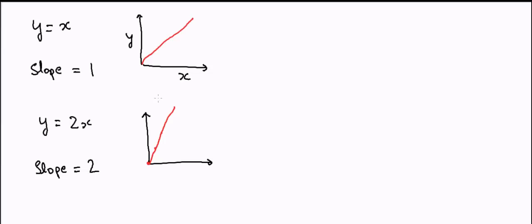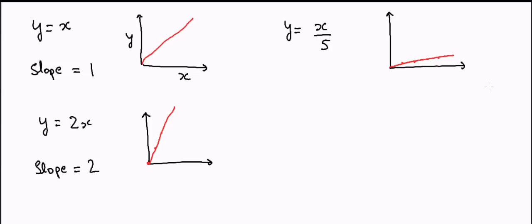In the same way, if we have y = x/5, the line will look something like this: when x is 0, y is 0, but when x is 1, y is only 0.2. So it will increase very slowly — the increase in y will be very small compared to x. We can say the slope is not that high, or y does not scale much with x. The slope in this case will be equal to 1/5.